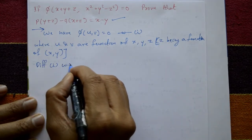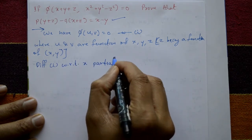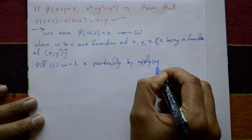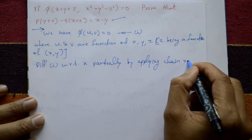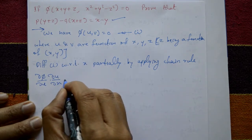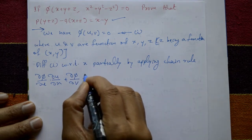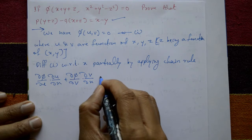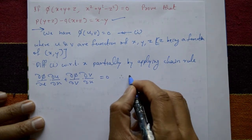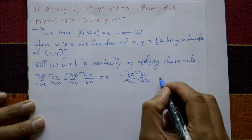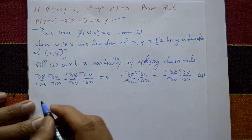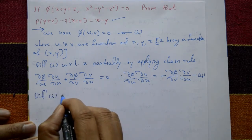Differentiate equation one with respect to x partially, treating y as constant, by applying the chain rule: ∂φ/∂u · ∂u/∂x + ∂φ/∂v · ∂v/∂x = 0. Shifting the second term to the right hand side gives ∂φ/∂u · ∂u/∂x = -∂φ/∂v · ∂v/∂x. Call this equation number two.